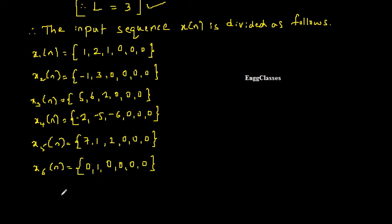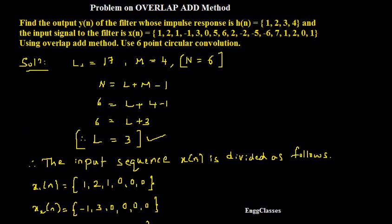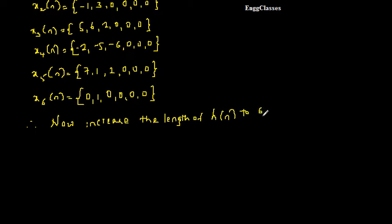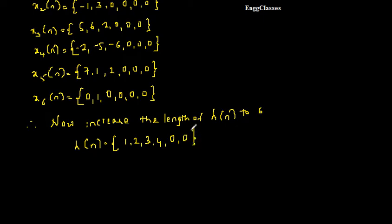Now I need to find the circular convolution of each block with the impulse response h[n]. h[n] is 1, 2, 3, 4, but it must also be of length 6. So I increase the length of h[n] to 6 by adding 2 zeros: h[n] = {1, 2, 3, 4, 0, 0}. This is because whenever finding circular convolution, both sequences must be of the same length.